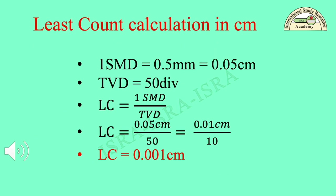Least count calculation in cm: 1 SMD = 0.5 mm = 0.05 cm. TVD = 50 divisions. Least count = 1 SMD / TVD = 0.05 cm / 50 = 0.01 cm / 10, therefore LC = 0.001 cm. This least count is expressed to 3 decimal places in cm.